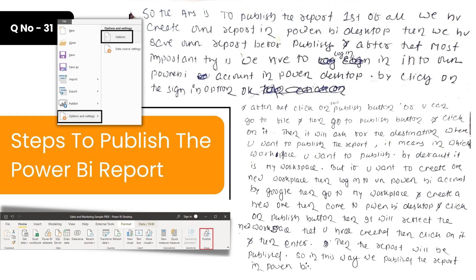You can also go to File and then click Publish. It will ask for the destination — which workspace you want to publish the report to. By default it is My Workspace, but if you want a new workspace, log into your Power BI account via browser, go to My Workspace, create a new one, then come back to Power BI Desktop and click Publish. Select that new workspace and click Enter — the report will be published to the Power BI server.